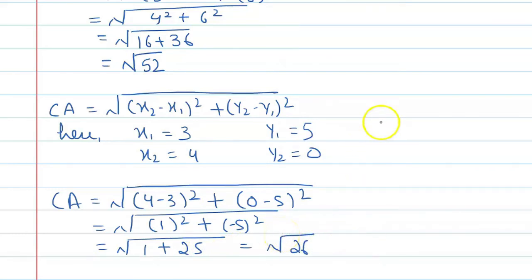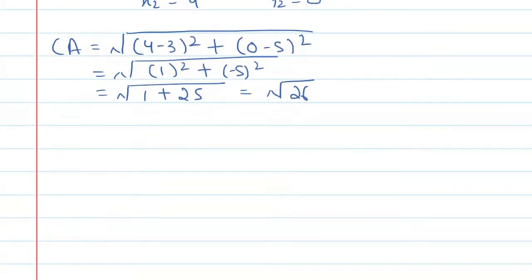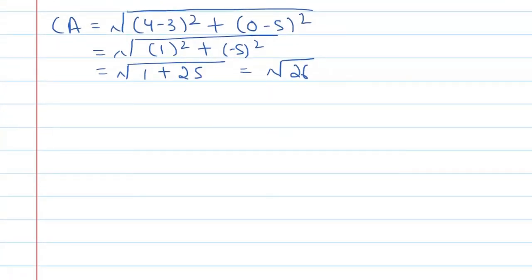From the above values, you can see two sides have the same value and the third side has a different value. That is BC, which is square root 52. So how is this triangle?